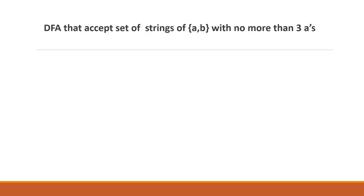No more than three a's means maximum three a's. We can have zero a's, one a, two a's, or three a's - that is what we call maximum three. This is different from exactly four or exactly one.